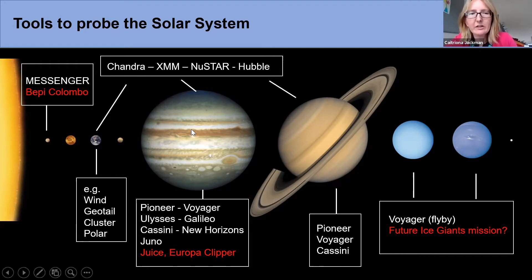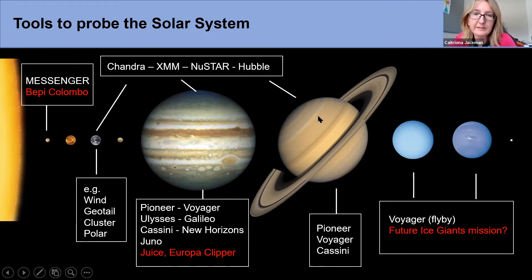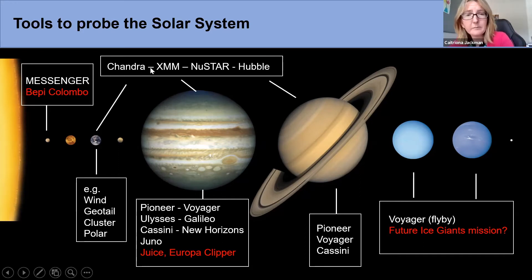In addition to spacecraft that have orbited or flown by these planets, we also have remote sensing tools to understand planetary space weather. These include ultraviolet telescopes like Hubble, which studies Jupiter and Saturn in particular, and X-ray telescopes including Chandra, XMM, and NuSTAR, which DIAS has used to study planets like Jupiter.